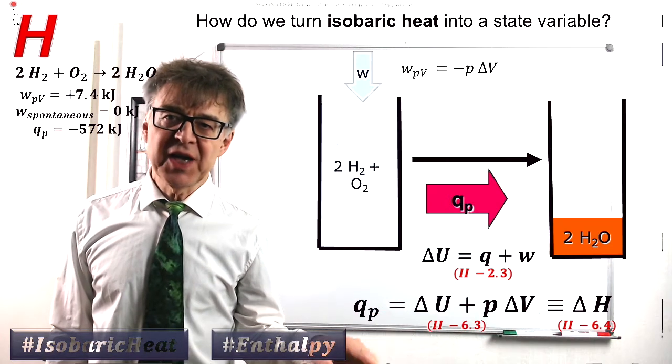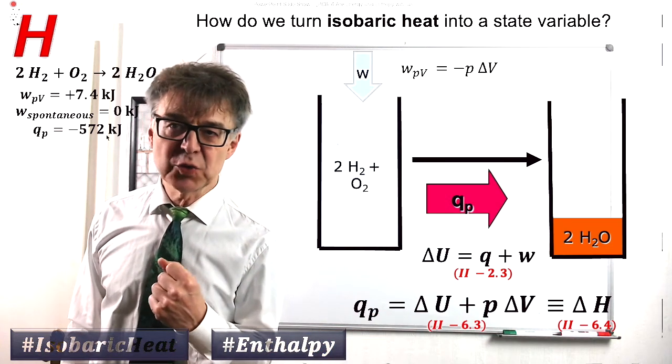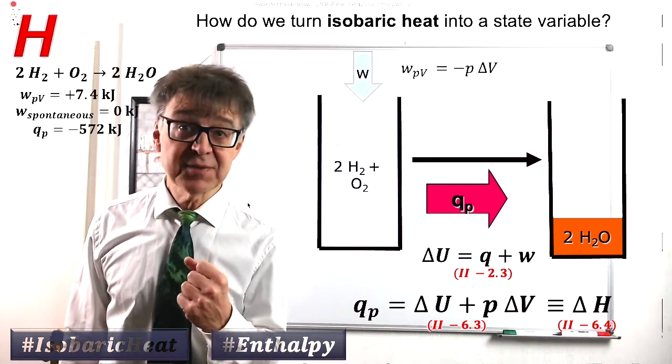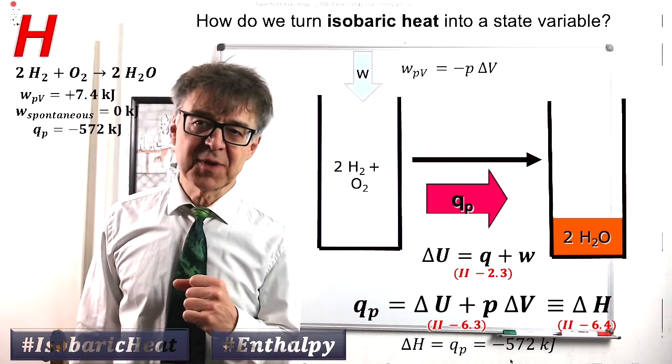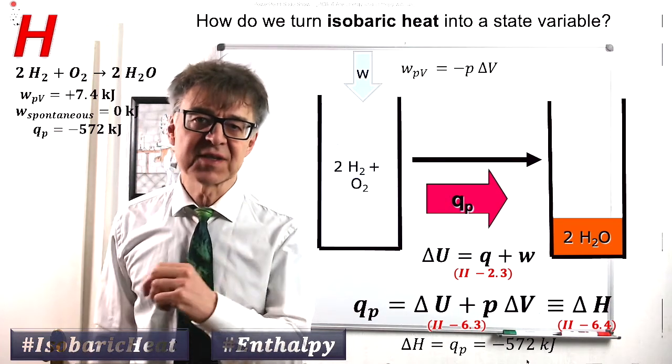We measure the isobaric heat of negative 572 kJ in the oxyhydrogen gas reaction. This also corresponds to the enthalpy of this reaction.